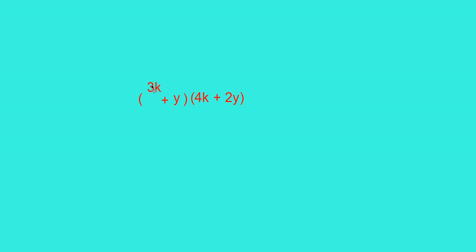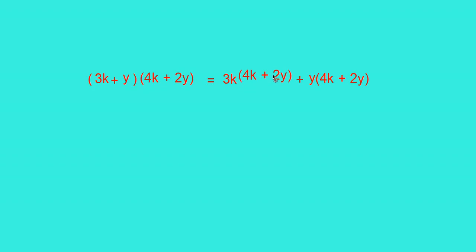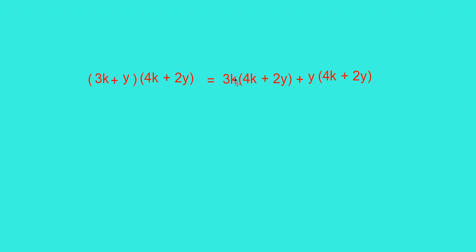Here, the first binomial has two terms: one is 3k, another is y. You have to multiply 4k plus 2y by both 3k and y. That we can write as 3k into 4k plus 2y, plus y into 4k plus 2y. You know how to multiply a binomial by a monomial. Multiply 3k into 4k and 3k into 2y: we get 3 into 4 is 12, k into k is k squared, so 12k squared, plus 3 into 2 is 6, k into y is ky, so plus 6ky.